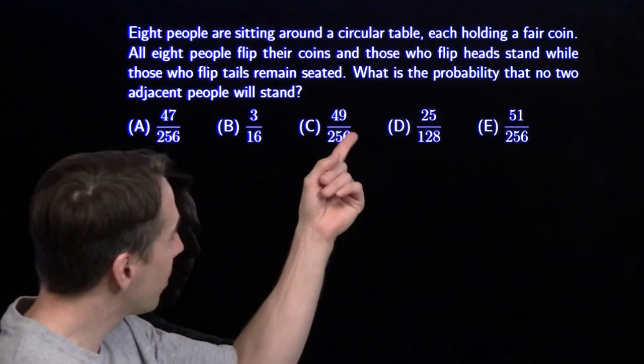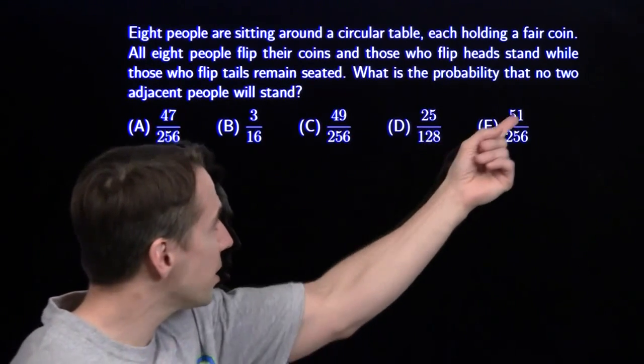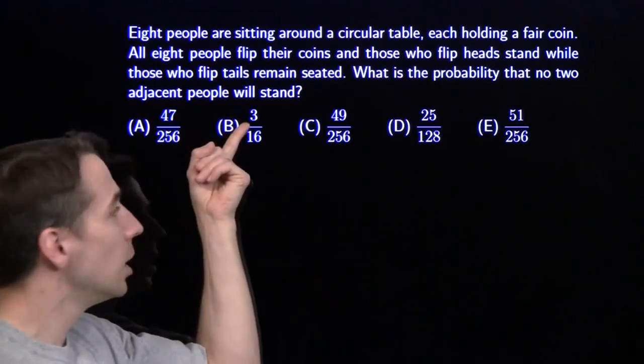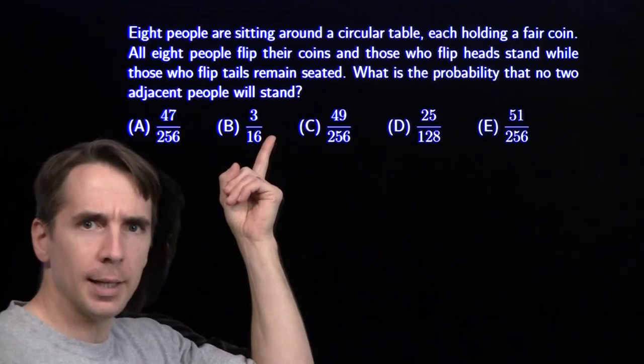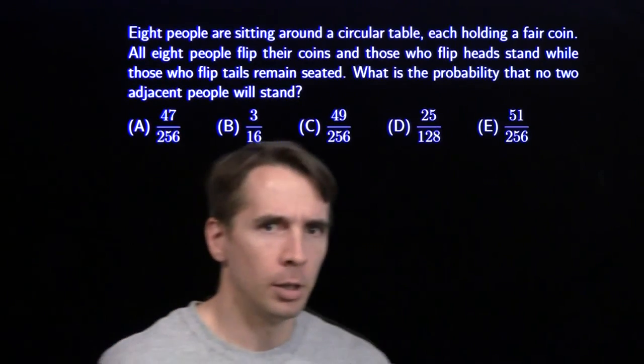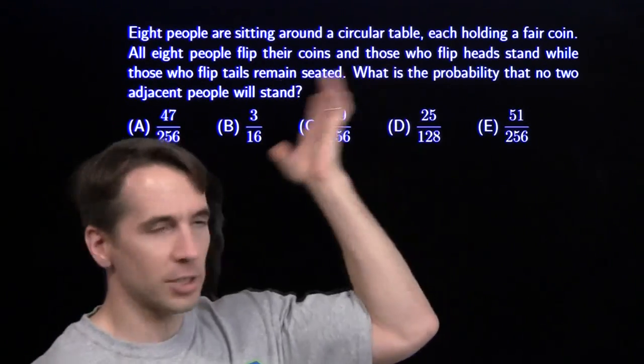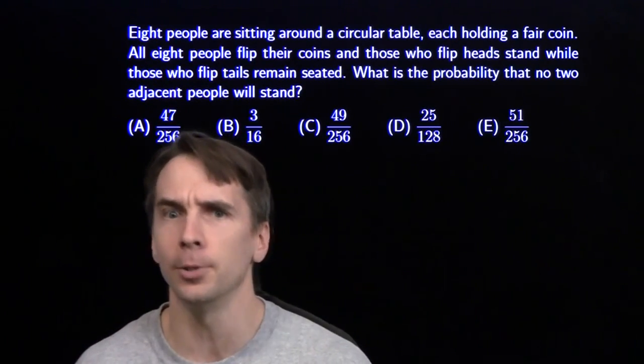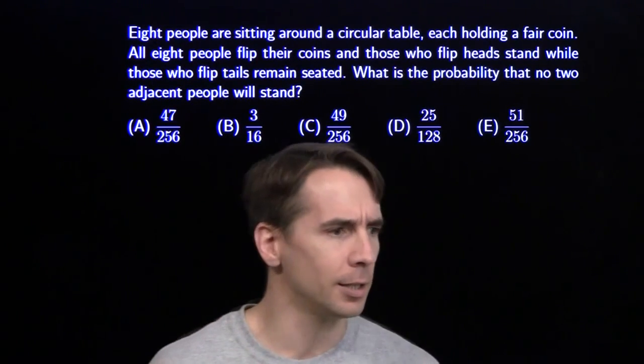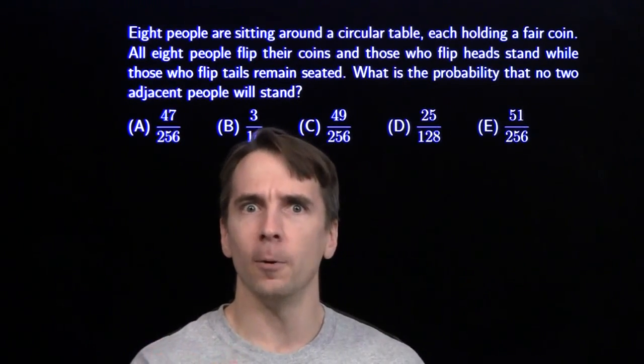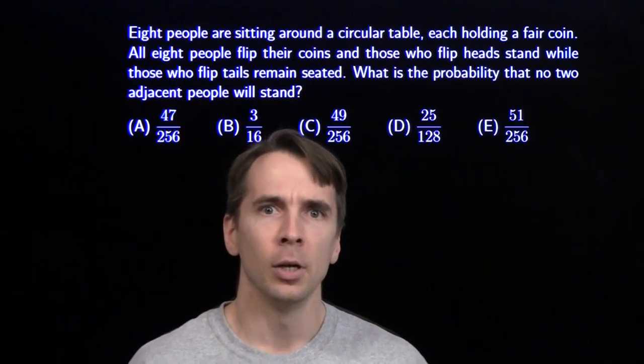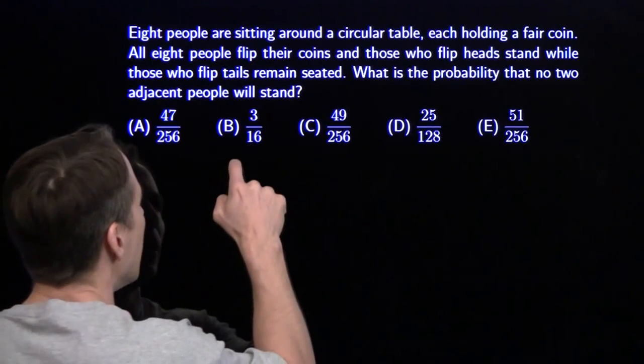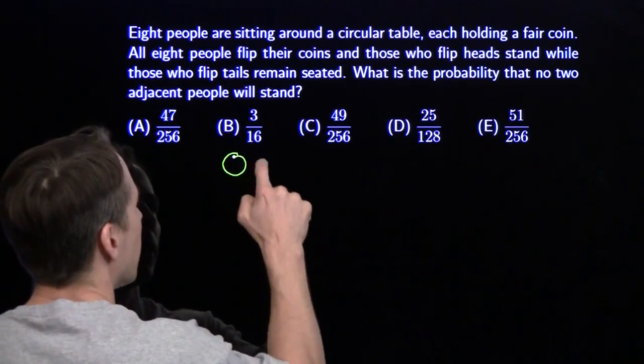Now I have to move on to the harder part, which is counting the number of possible ways these coin flips can come out so that no two adjacent people will stand. How can that happen? Well, if nobody flips heads, then obviously that's going to work out. Just one person flips heads, that's going to be fine too. There won't be two people next to each other standing, and that gives us a way to organize our counting. We're going to organize our counting based on the number of heads total that comes up.